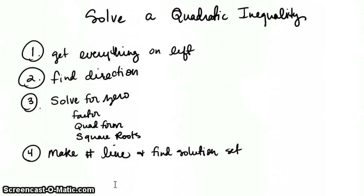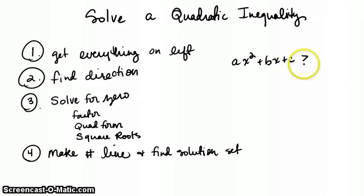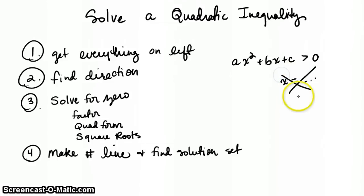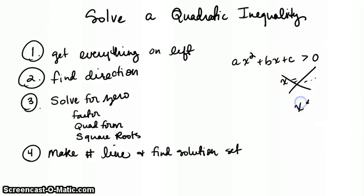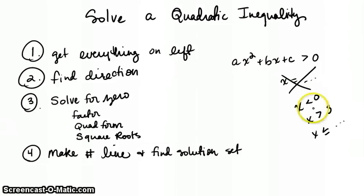Now we're going to learn how to solve a quadratic inequality. A quadratic inequality is something where I have ax squared plus bx plus c is greater than or less than — something that's not an equal sign — and then zero. So what I want to solve for is x. Your solutions aren't going to be x equals something, because it's not an equation. Instead, it'll be x is less than something or x is greater than something, or maybe x is less than or equal to some number — you're going to have inequalities in your answer, not an equal sign.